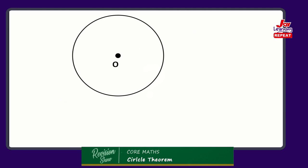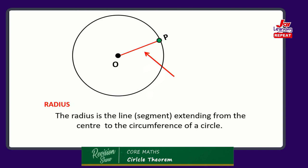Now the radius. If we had a point P on the circle, the length or the line segment from O to P will be our radius. It is that line segment extending from the center of the circle to the circumference of the circle.